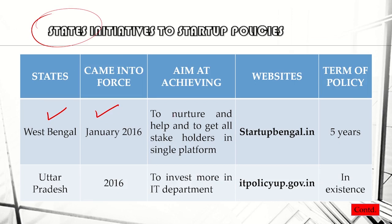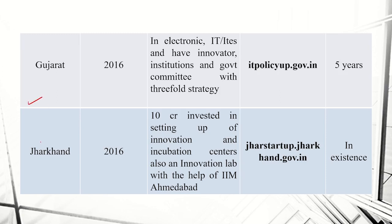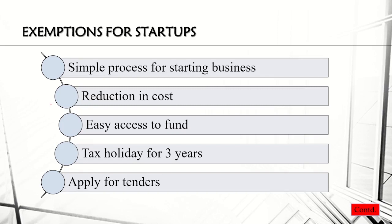West Bengal had a startup policy in 2016 to bring all stakeholders onto a single platform — they made the Startup Bengal website and the policy is for five years. Uttar Pradesh has invested in its IT department and made a website for startups. Rajasthan, Odisha, and Karnataka each have their own websites with startup support for different durations. Karnataka's goal, for example, is to have 2,000 tech startups and 600 product startups including 25 solving social problems over five years. Gujarat and Jharkhand are also among the states supporting Startup India.